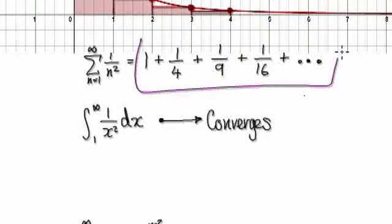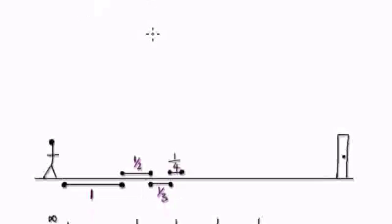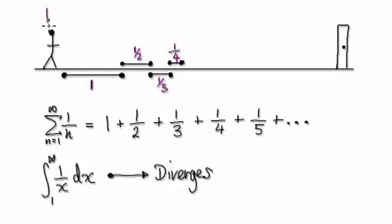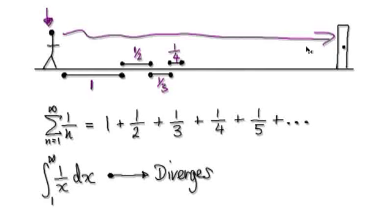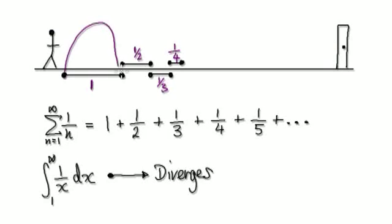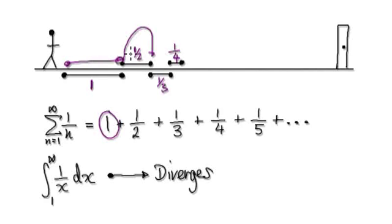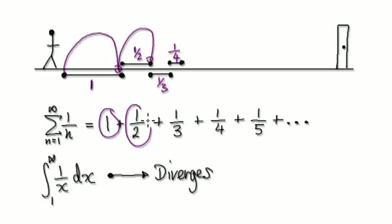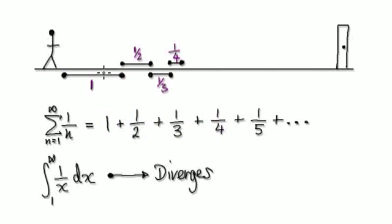We can interpret series like this: imagine you're standing on one side of the room and you're trying to walk across to the other side. Your first step would be one. Your second step is going to be half of your first step. So your first step is one, your second step is a half, your third step is a third, and your fourth step is a quarter, and so on. The question is: would you be able to walk all the way across the room?